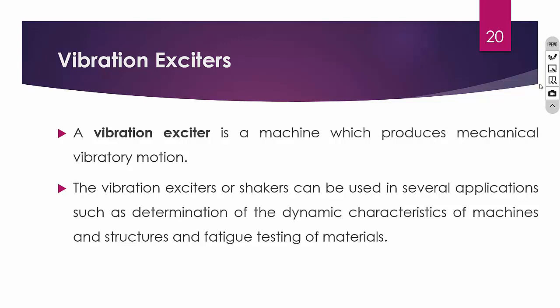In the previous lecture we discussed about various transducers or sensors used for measuring vibration. In this lecture we are going to discuss about vibration exciters. A vibration exciter is a machine which produces mechanical vibration. A sensor will measure the vibration and the exciter will produce the vibration. The sensor converts the mechanical input into an electric pulse, while the exciter produces a mechanical vibratory motion.